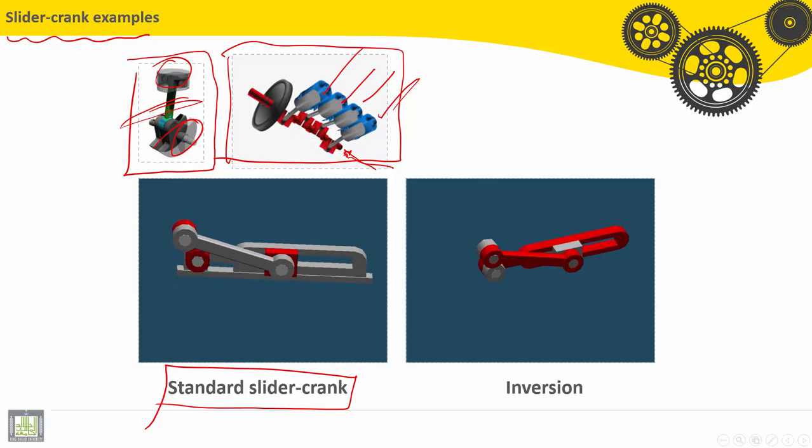On this video also, you can see the standard slider crank mechanism. So, the input can be the translation here, of the piston, and the output will be the rotation on the crankshaft, or the input will be here, the rotation, and the output will be a translation for the slider.